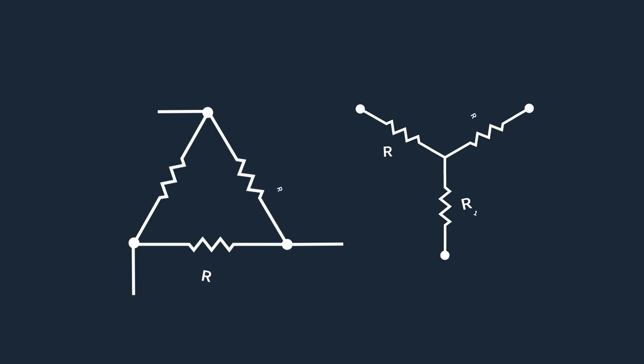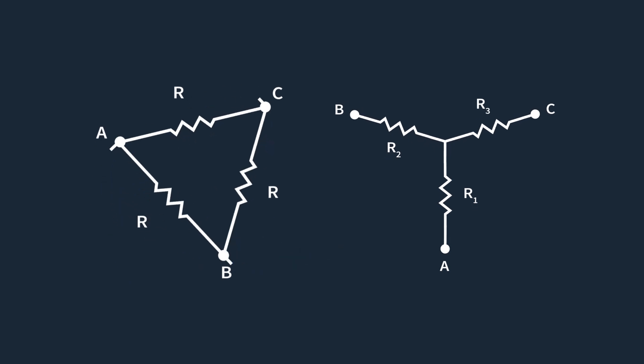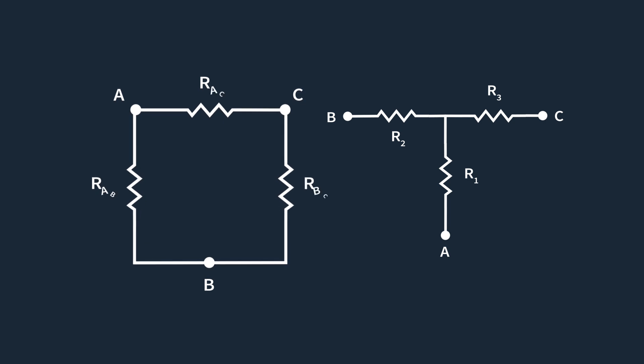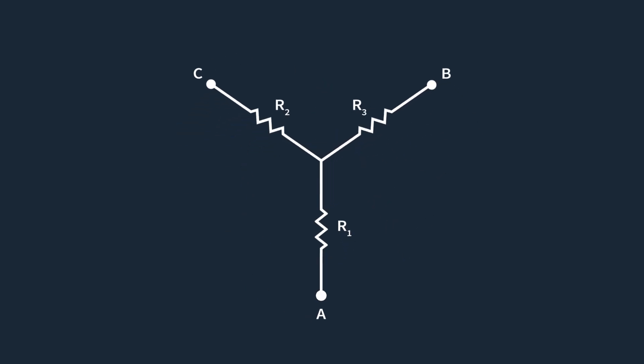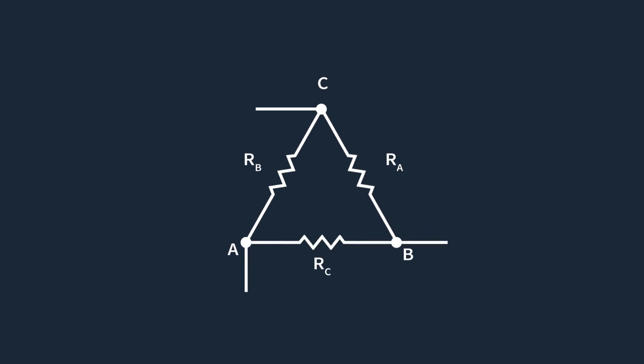Transforming between delta and Y configurations is often useful because it simplifies a circuit. These transformations allow engineers to convert complex resistor networks into simpler series-parallel combinations, making it easier to calculate the total resistance, voltage, or current. To perform a conversion, identify the circuit configuration type — delta or Y — and use the appropriate formulas. The delta configuration is typically drawn as a triangle, while the Y configuration takes the shape of the letter Y, though they can also be redrawn as pi or T configurations. Once identified, the equivalent formulas can be applied to convert between configurations.